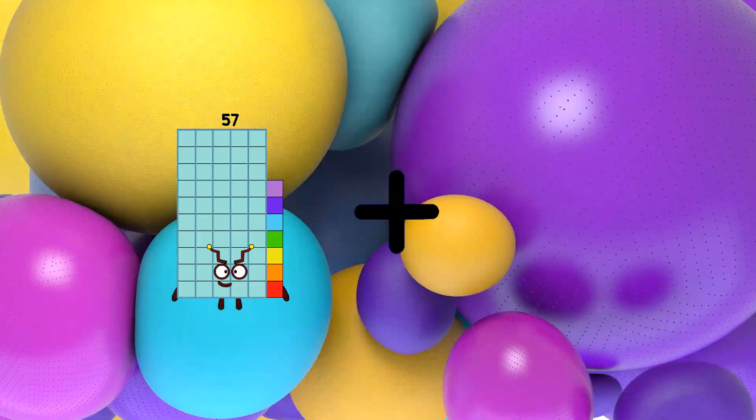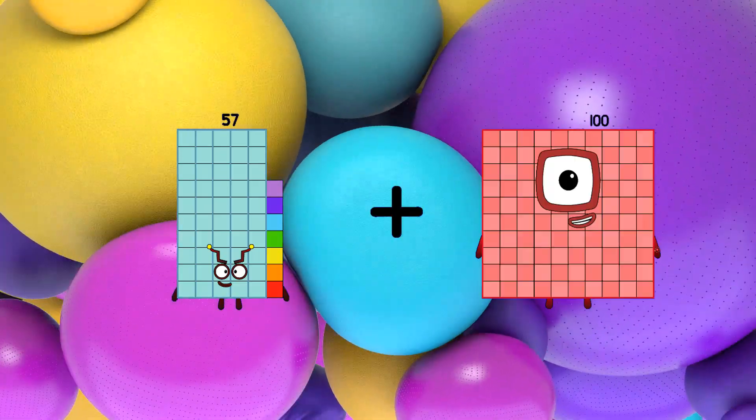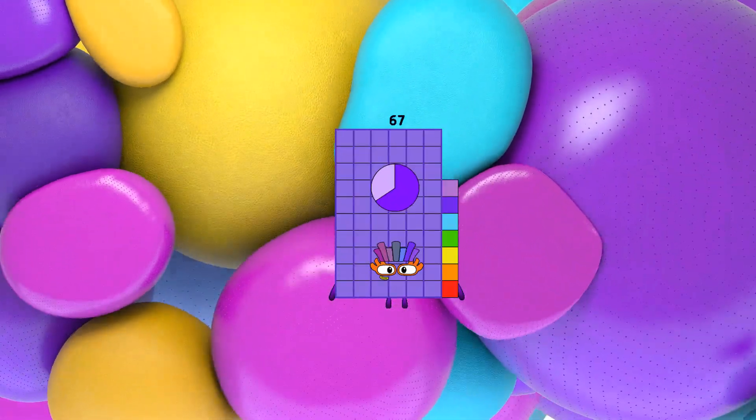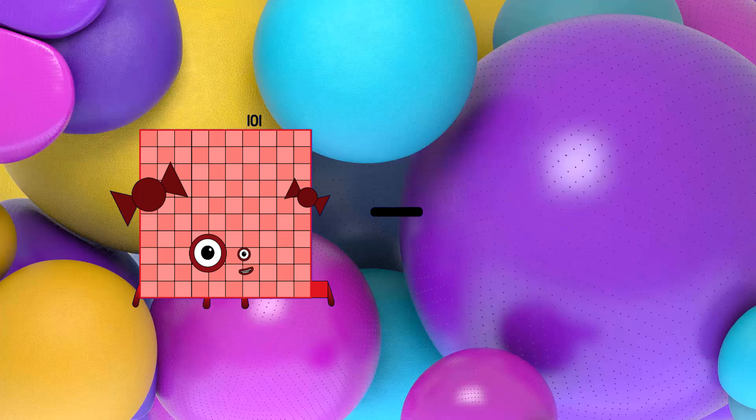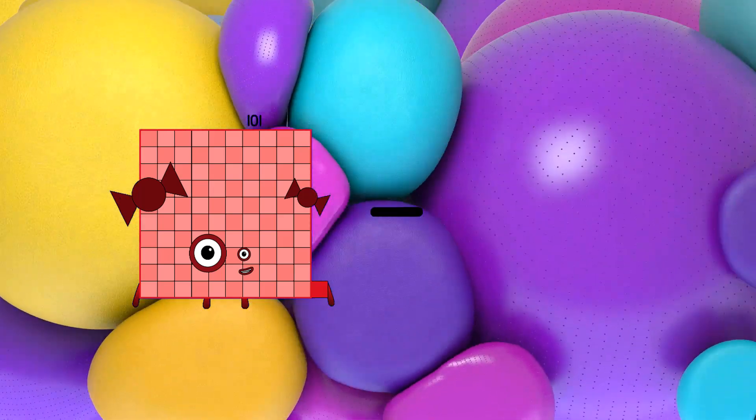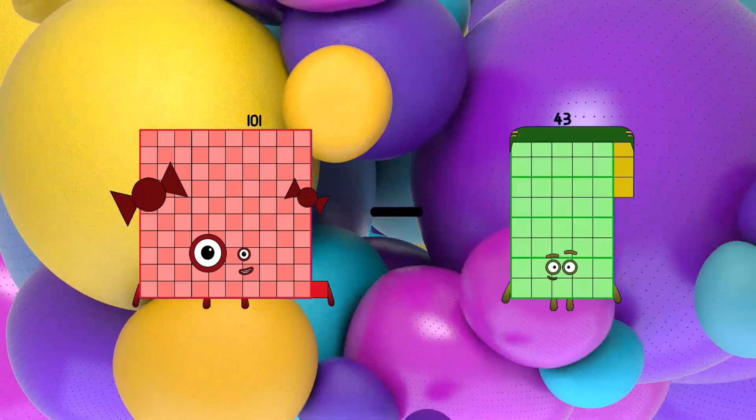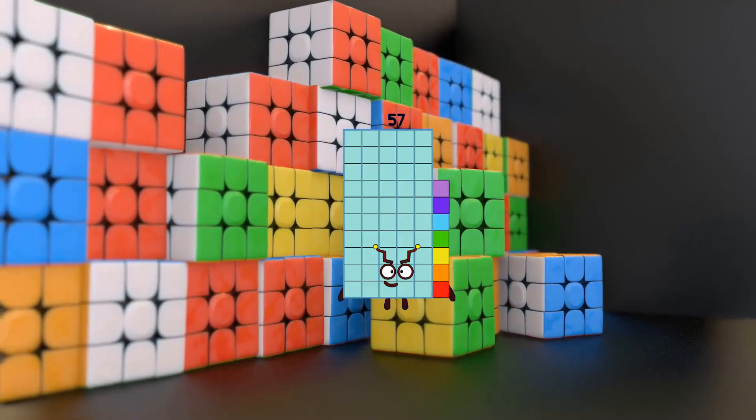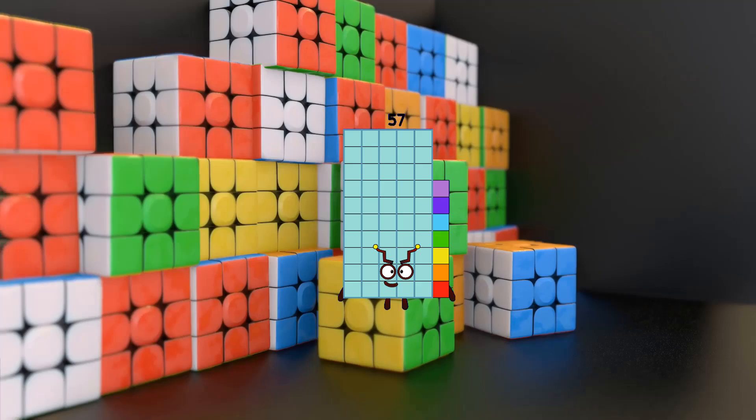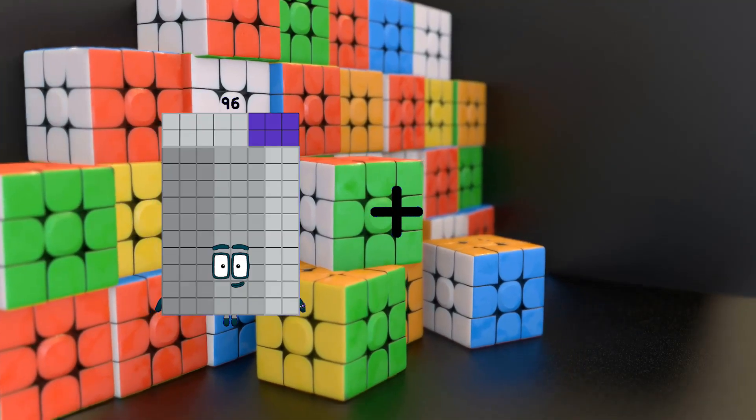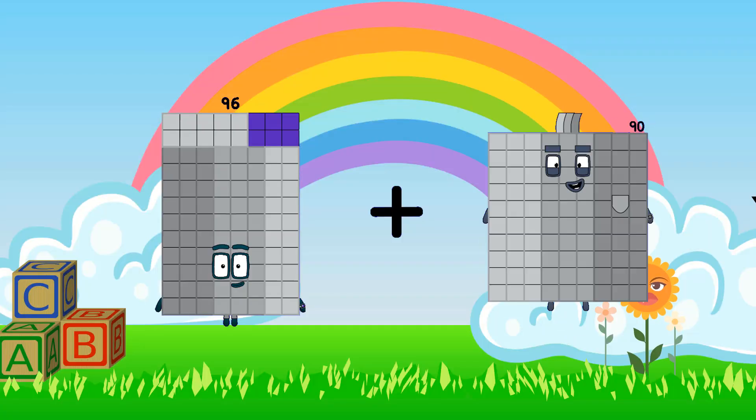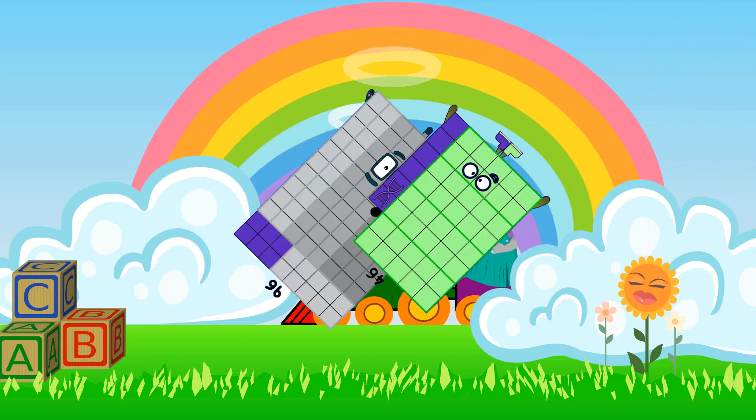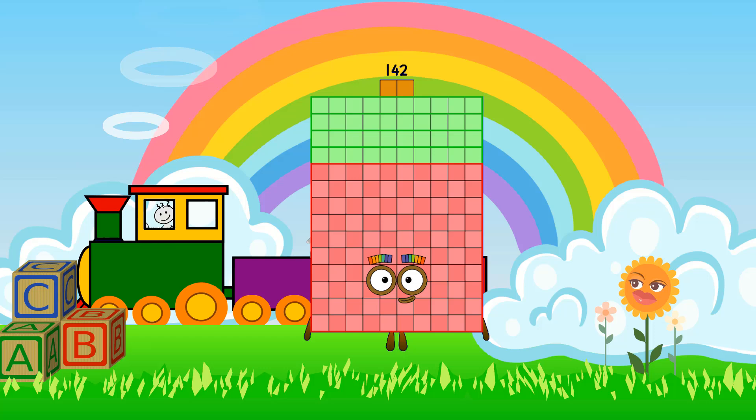57 plus 10 equals 67. 101 minus 44 equals 57, 96 plus 46 equals 142.